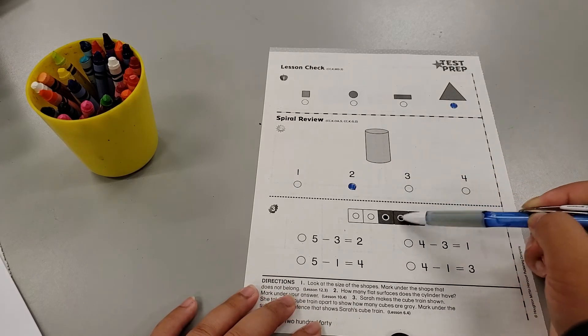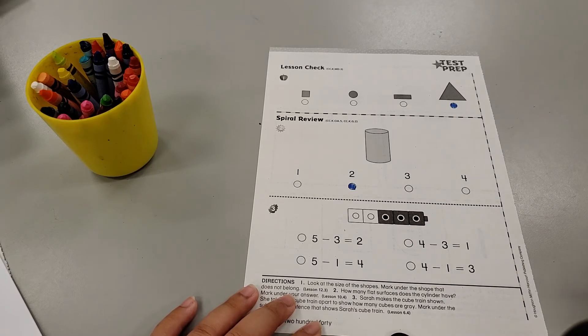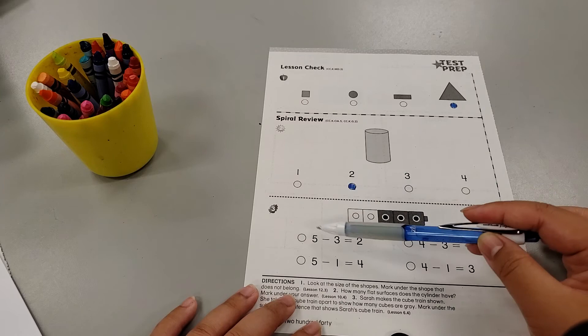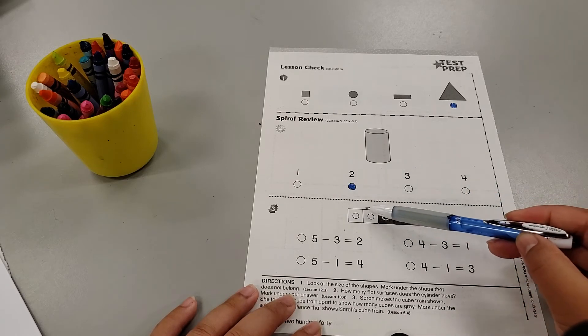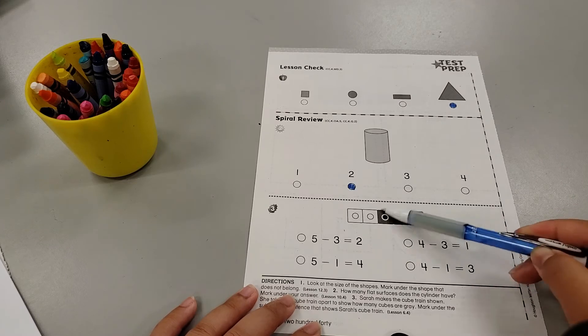One, two, three, four, five. So we have five, a five train, and then it's split up into how many white, how many gray?